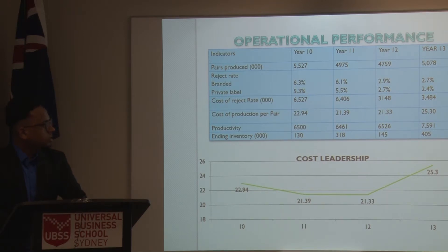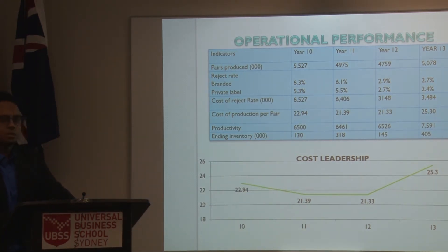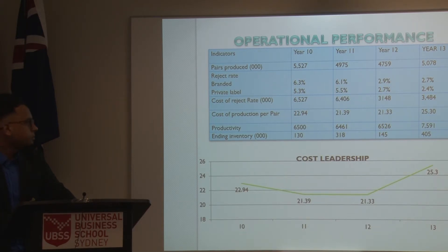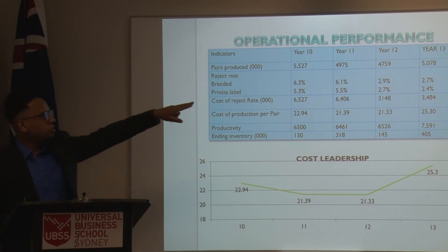Now let's talk about the cost of production. In year 10, the cost was $22.94. But in year 13 the price got higher — the reason was because we started producing six-star shoes, which cost us more. Looking at productivity, in year 10 it was 6,500, and because of the plant upgradation and worker investment, it increased year by year to 7,500. Regarding ending inventory, in year 12 we had only 145 million, which resulted in lost sales because we didn't meet the demand.